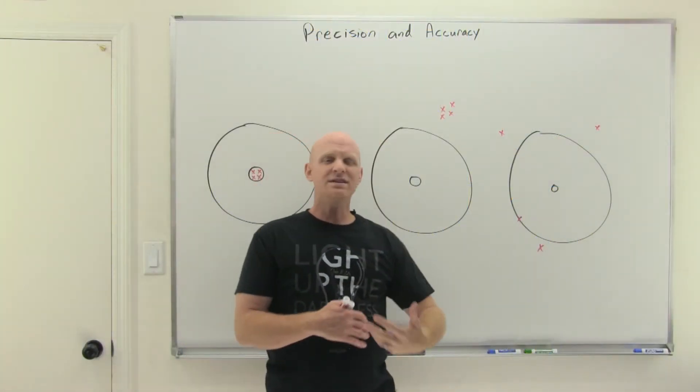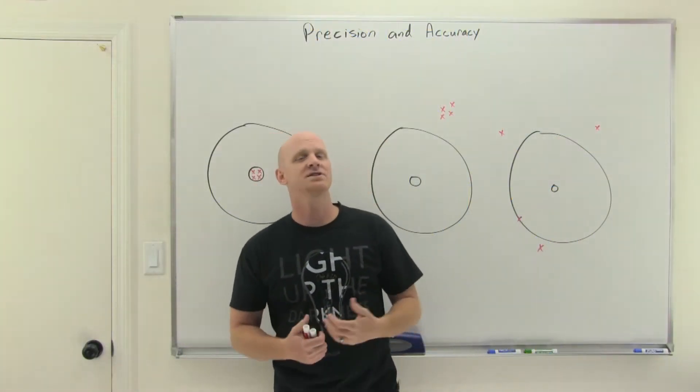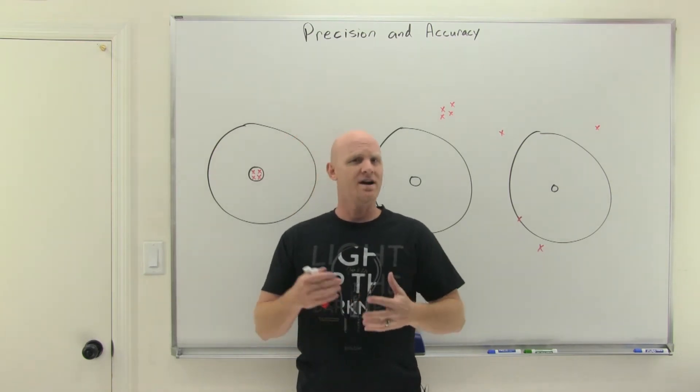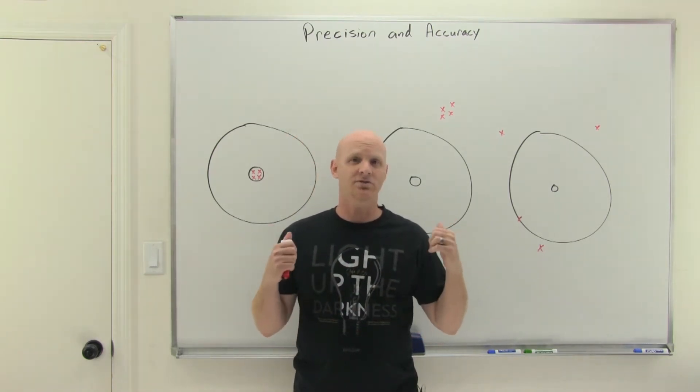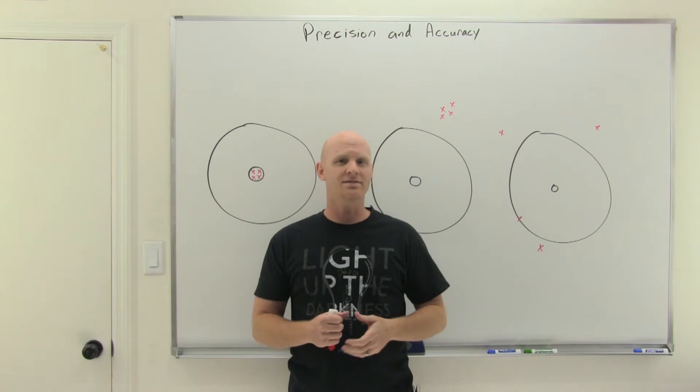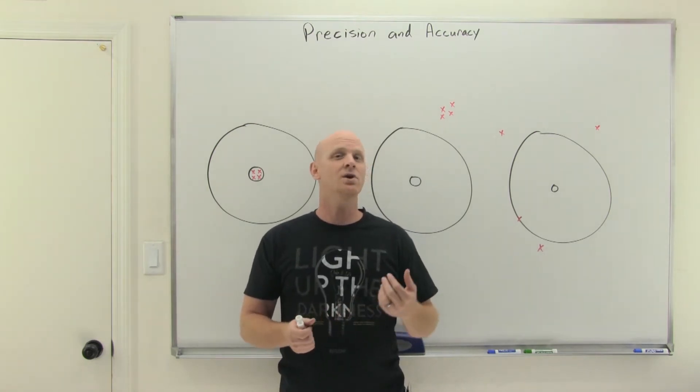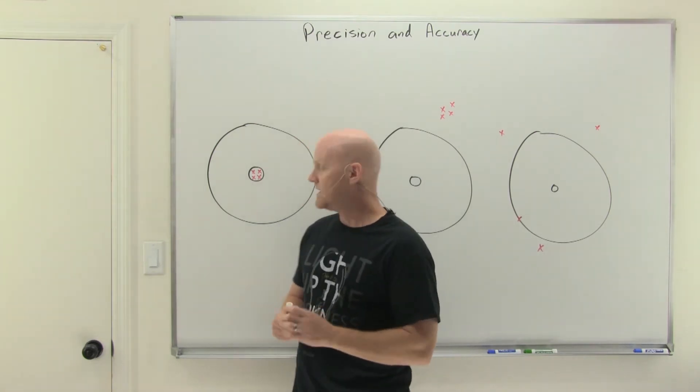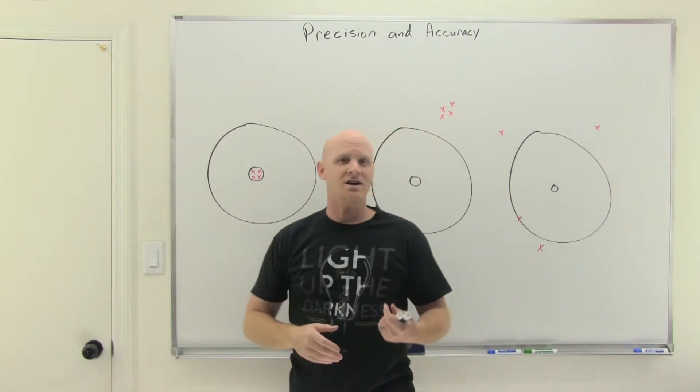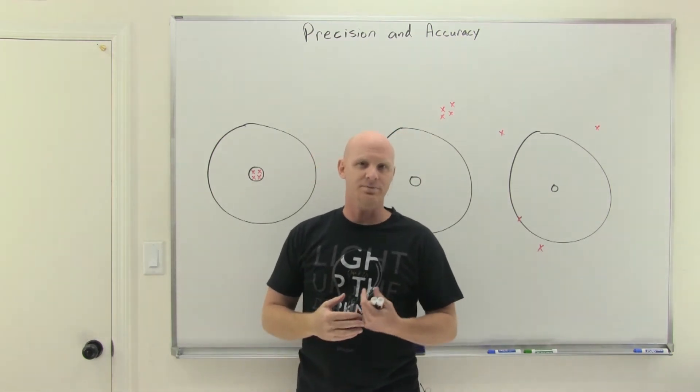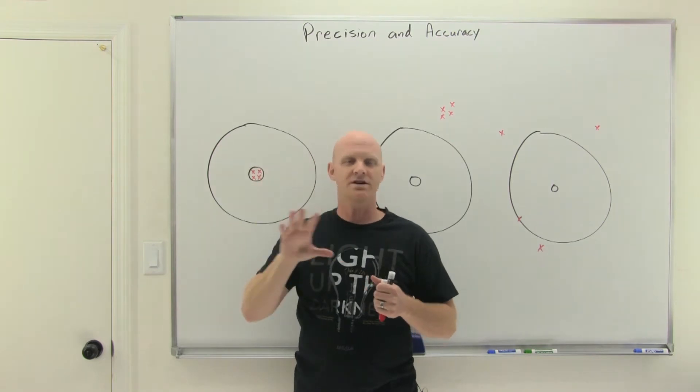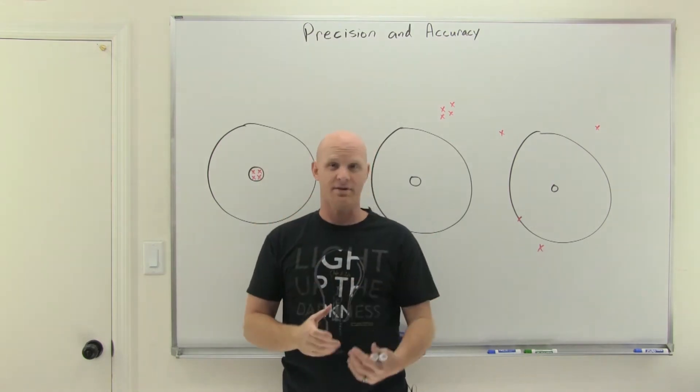Precision and accuracy, when we use these in everyday language, we often think of them as synonymous. But in the world of science and engineering, these are not synonymous terms, and they're related to each other, but they're definitely not synonymous, and you definitely have to know the difference between the two. So, precision talks about the repeatability of a measurement. How close a bunch of measurements are all to each other. That's precision.